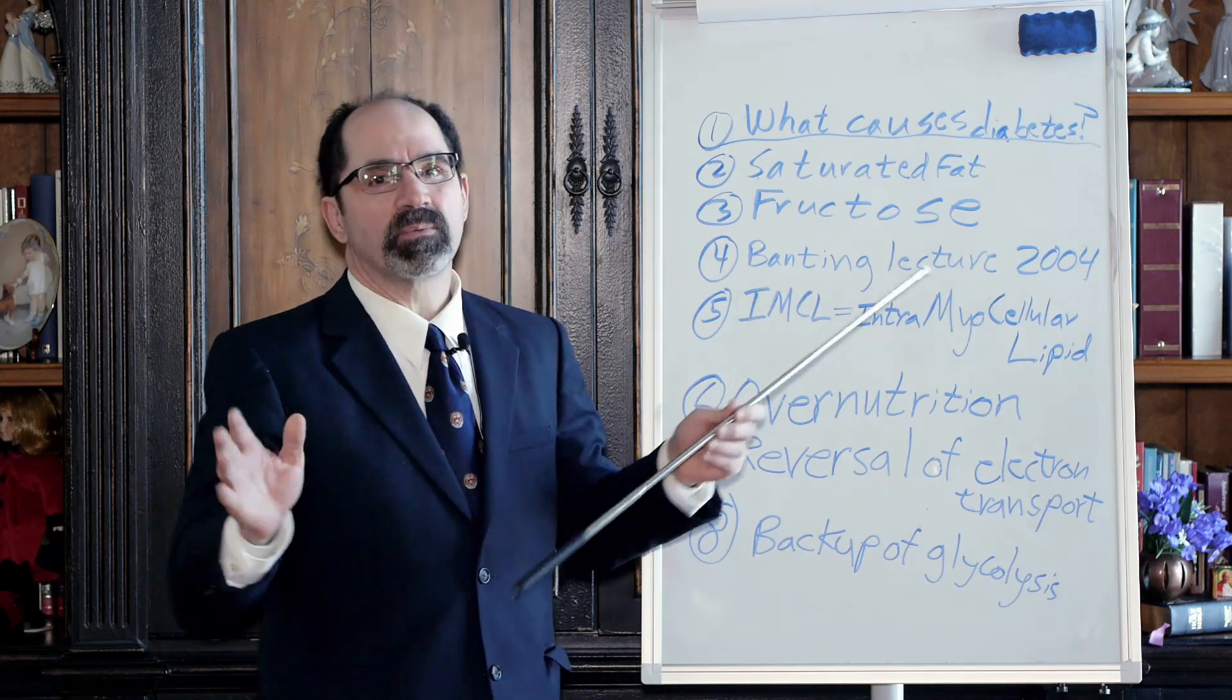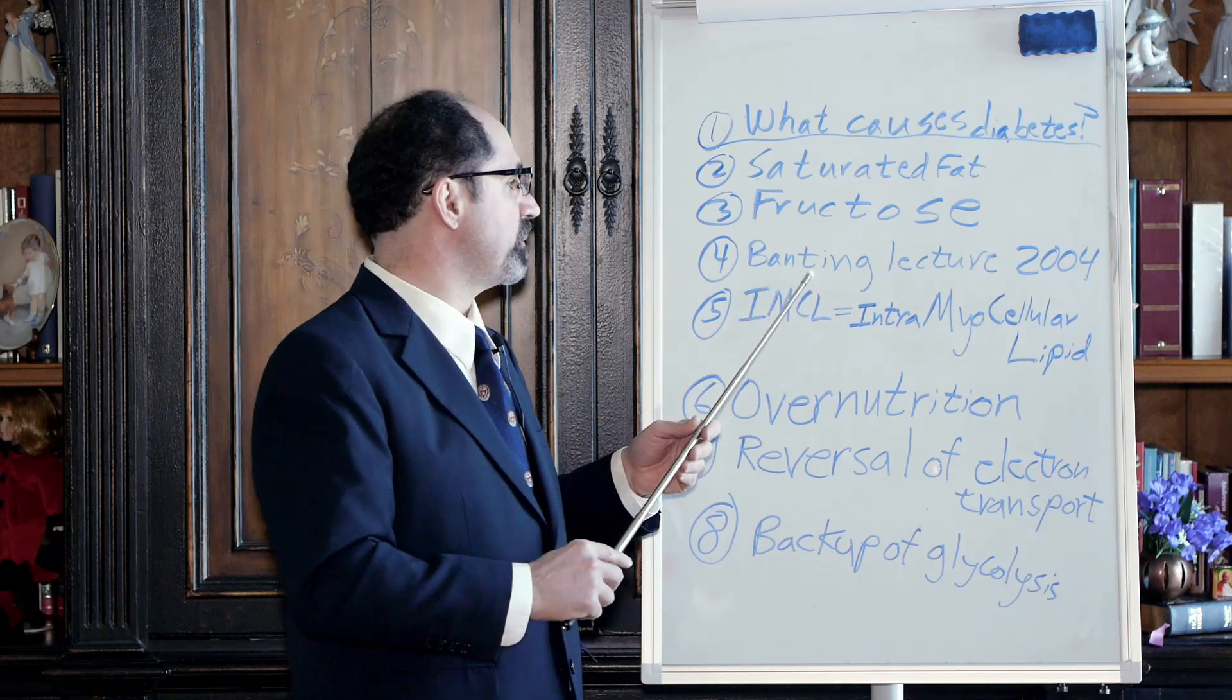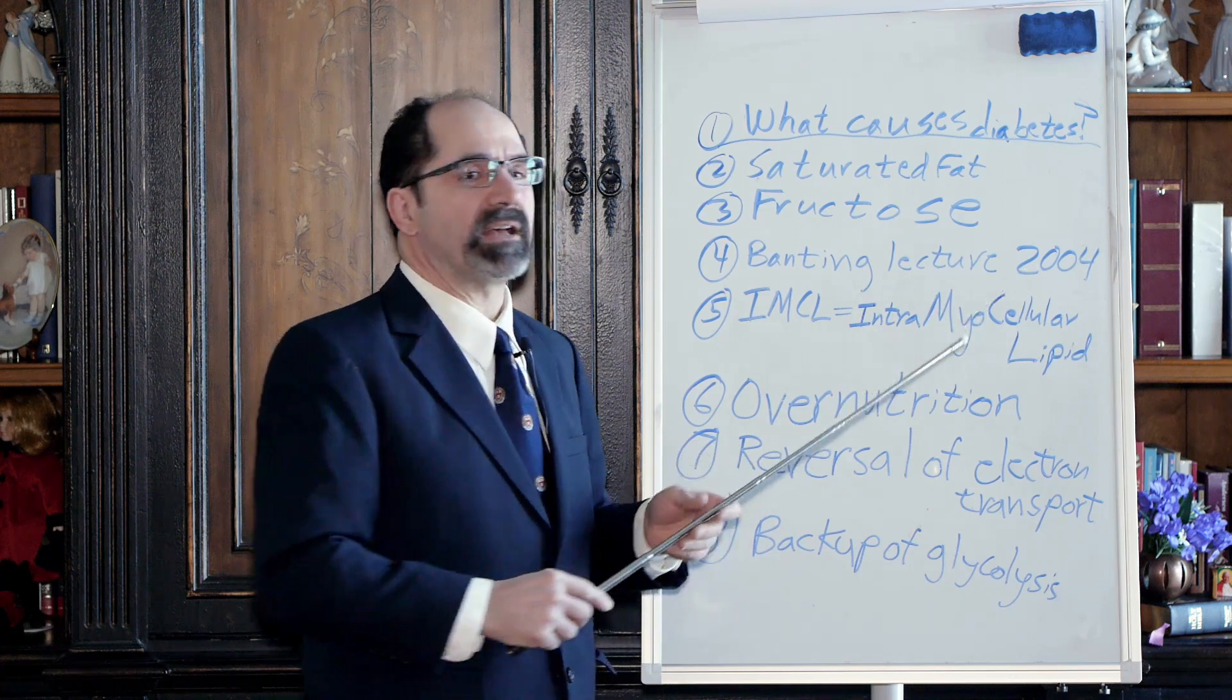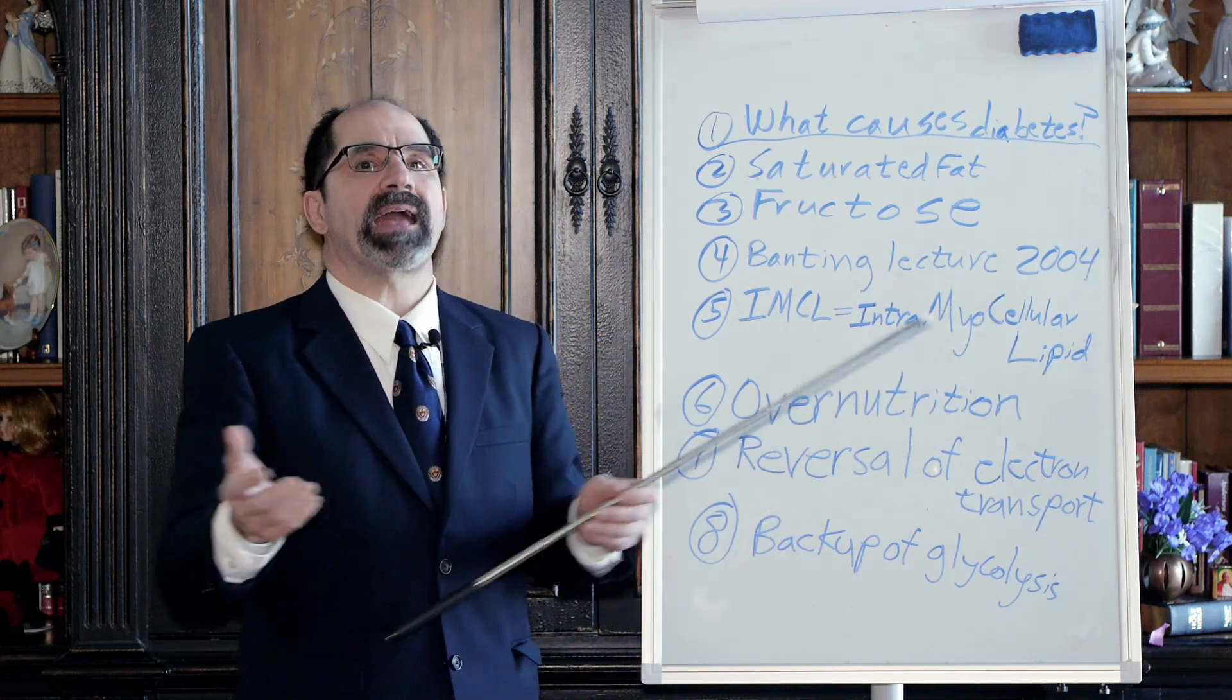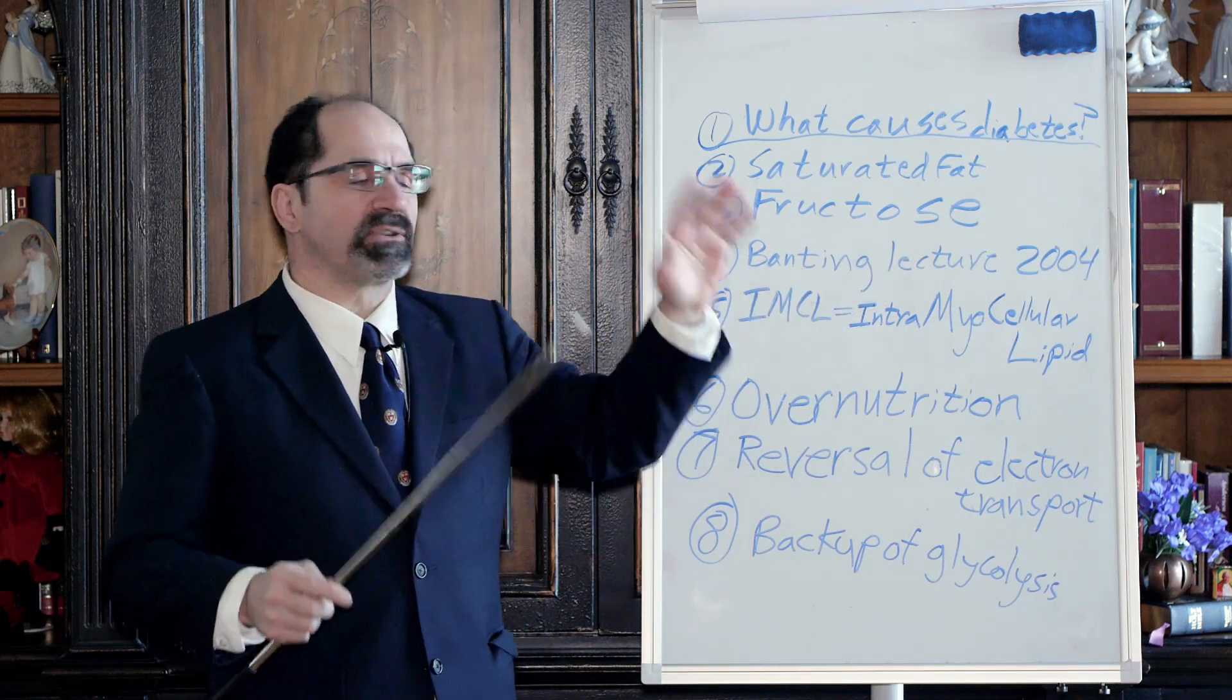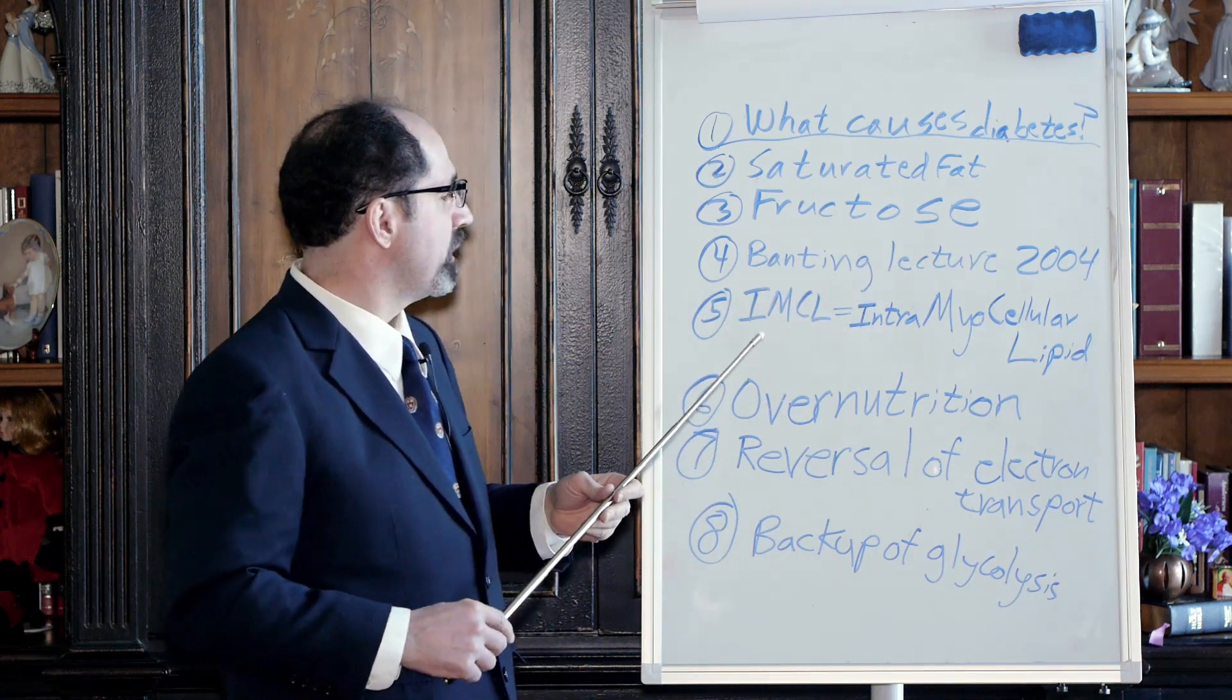Here is the best paper ever written on diabetes in the entire history of diabetes. It's the Banting Lecture of 2004. The author is named Michael Brownlee. Michael Brownlee is a type 1 diabetic. And the guy is a genius. He deserves a Nobel Prize.